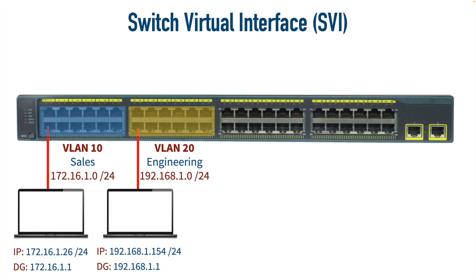We've seen that if we have a Layer 2 switch that's not capable of making forwarding decisions based on IP address information, we need to reach out to an external router — like a router on a stick — in order to do inter-VLAN routing. However, if we have a switch with Layer 3 capabilities, we can route internally without reaching out to that external router, and that's what we're going to consider in this video.